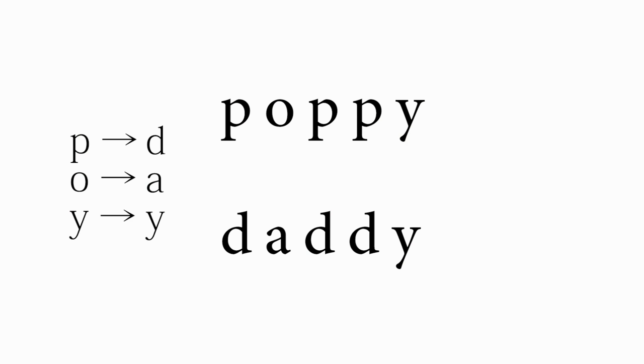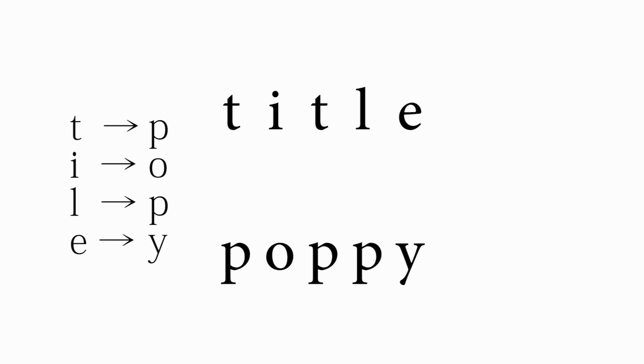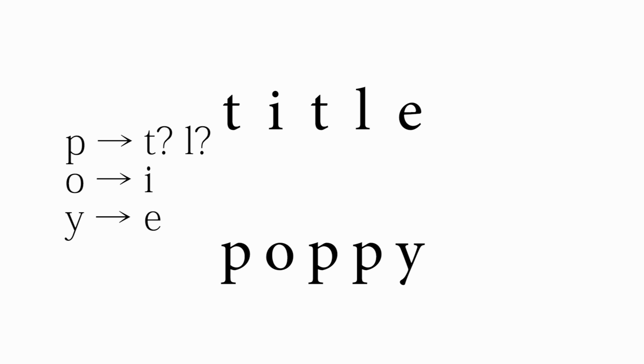We can look at isomorphism in other things to make it clearer. Words can be isomorphic. For instance, the word 'poppy' and the word 'daddy' are isomorphic, because we can make a mapping between the two that preserves the ordering of characters: P maps to D, O maps to A, Y maps to itself, and in the opposite direction, Y maps to itself, D maps to P, and A maps to O. It's a bijection because it goes both ways. If we tried to map 'title' to 'poppy', we'd fail — P would have to map to two different letters, which you can't do, so those words are not isomorphic.